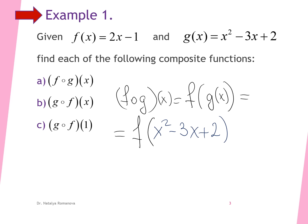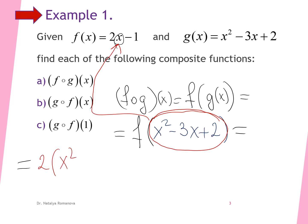We have to find the value of function f when the independent variable equals x squared minus 3x plus 2. We take x squared minus 3x plus 2 and plug it into f of x. It would be 2 times (x squared minus 3x plus 2) minus 1. We distribute the 2 to get 2x squared minus 6x plus 4 minus 1.